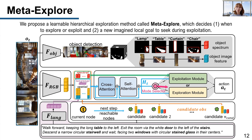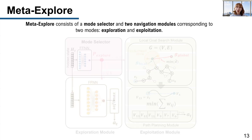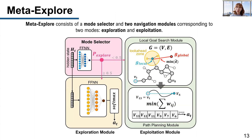We implement an end-to-end learnable network for hierarchical navigation. There are some features that come from the language and visual encoders, and all this information is combined and passed through a cross-modal transformer. The output is hidden state h_t, and we use this hidden state to select the navigation mode at the high level, and also to choose a specific action at the low level. Specifically, we have a mode selector and two navigation modules corresponding to exploration and exploitation. The mode selector receives hidden state h_t and passes it through a feed-forward neural network to obtain a scalar value p-explore, which means the probability to explore.